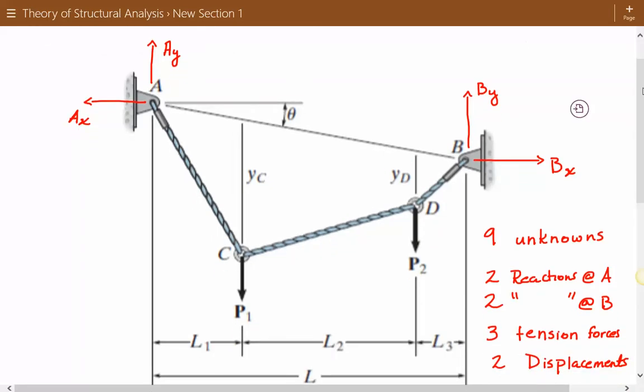At point A and B are the support locations for this cable, and at point C and D we have concentrated loads acting. Theta is the angle between the support locations A and B. L is the span length of this cable.